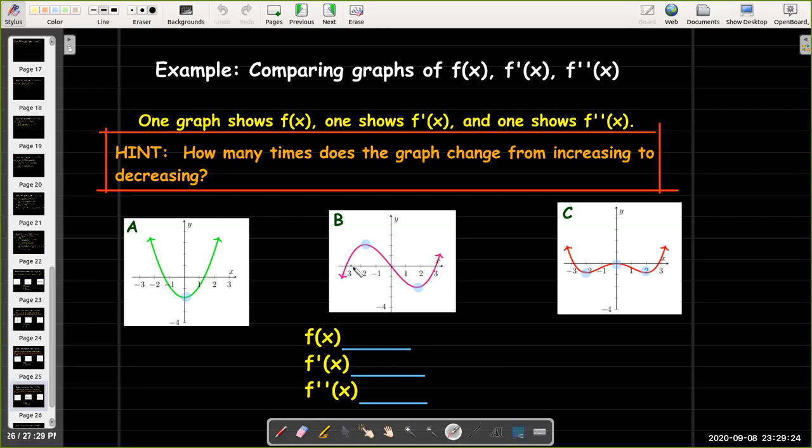On the other hand, B has two change points where it's changing from increasing to decreasing or vice versa. So the derivative of B would have to have two zeros, and A has exactly two zeros. So A could be the derivative of B.